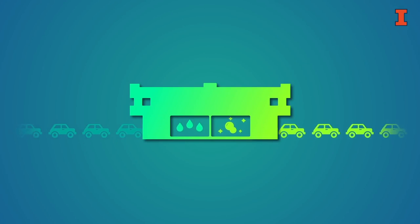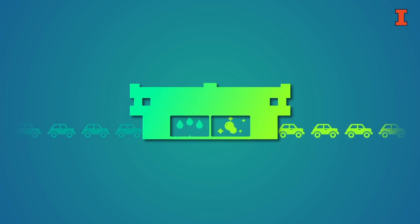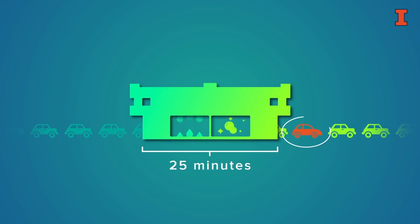Now let's see what happens when we look at a particular car. We see a new brown-colored car come in among all the dusty gray cars. We wait to see what color it is when it comes out. Ten minutes later, there's still a green car coming out — not our car. We find out that it takes 25 minutes for this specific brown car to come out as a shiny red car at the other end.